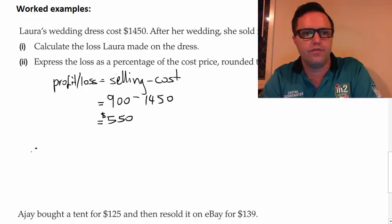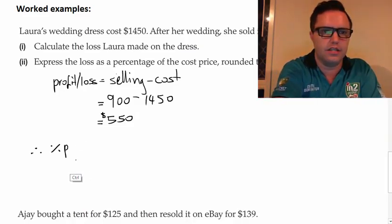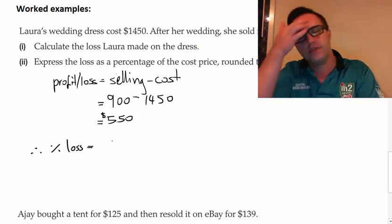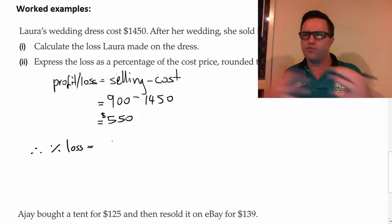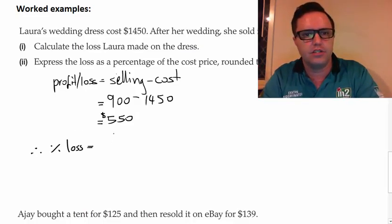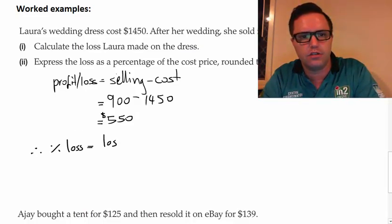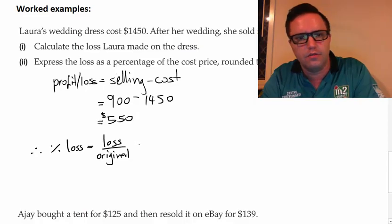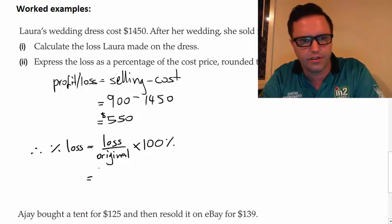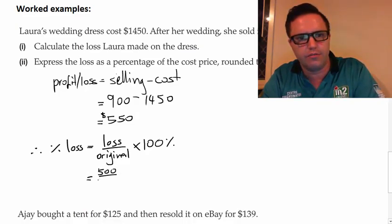And therefore, our percentage profit, whoops, not profit, loss. So that's part one done. Part two, our percentage loss will be equal to, now when we start to use these formulas, so like a particular thing written out to figure something out, you need, you want to write the formula out first. So percentage loss will be equal to the loss over the original amount multiplied by 100%.